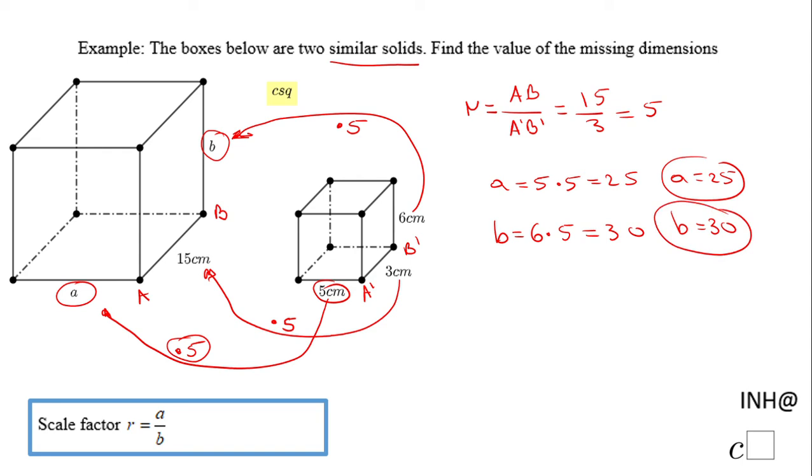Something like 15 over 3, the corresponding size, equals a over 5, equals b over 6. And you do the cross multiplication. This is another way to do this problem.